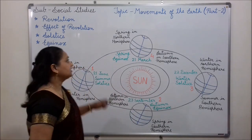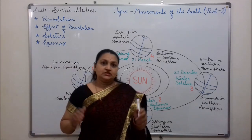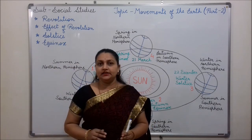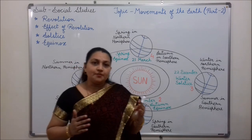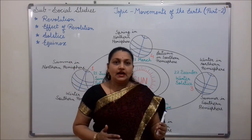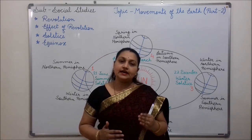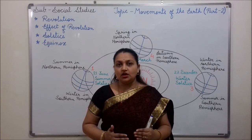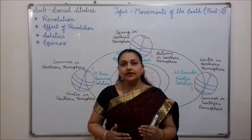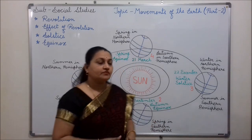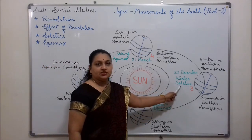Now, come to the solstice. The day on which the sun shines vertically overhead the Tropic of Cancer or the Tropic of Capricorn, and the duration of the day is the longest in that hemisphere, is called solstice. There are two solstices in a year: summer solstice and winter solstice.